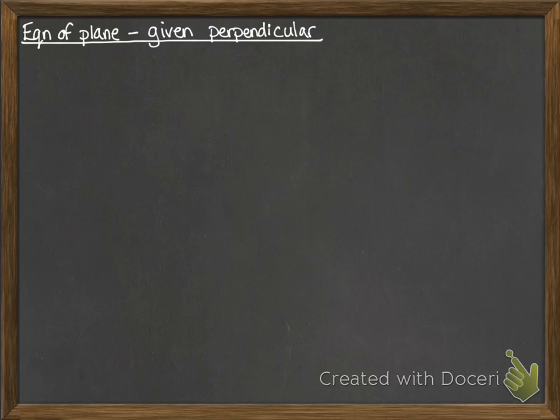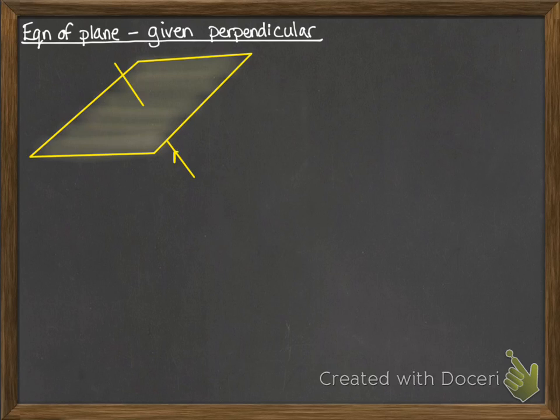Now the equation of the plane if we're given a perpendicular to the plane. So here's our plane. This time we're given this line that goes perpendicular through it. That's called the normal to the plane, so we'll use the notation of n for that vector.